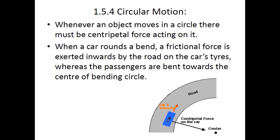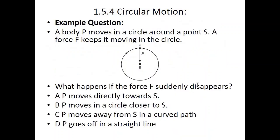When a car turns, a frictional force is exerted inwards by the road. When a car takes a sharp or circular turn, the passengers are slightly bent toward the center of the bending circle — this is due to the centripetal force. You might have noticed this while taking a turn, that your body instinctively turns towards the center of the bend.